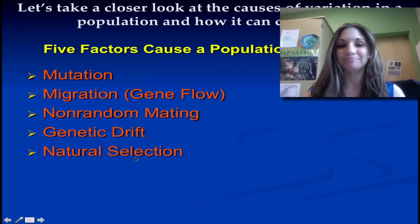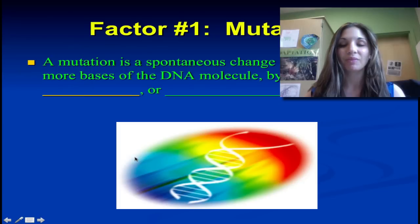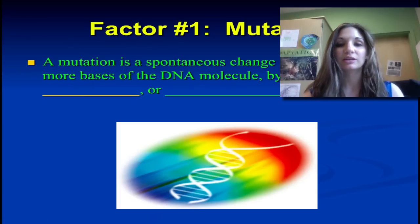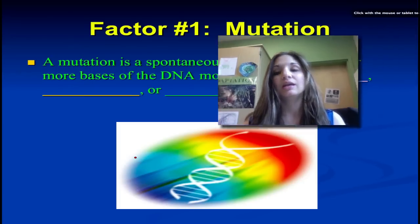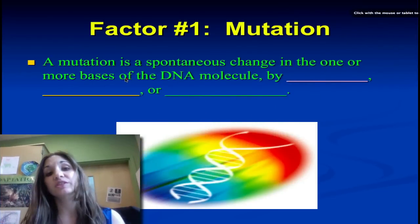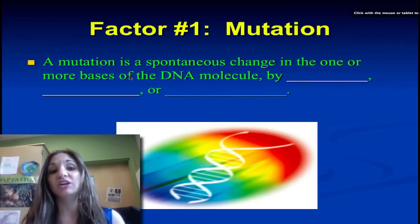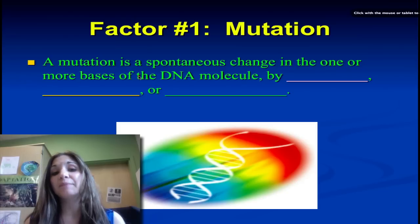And last but not least, we'll begin our discussion of natural selection. So let's get started. Recall that mutation is the ultimate source of all variation in a population, and mutations tend to happen spontaneously.